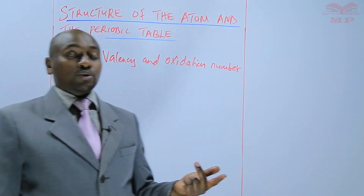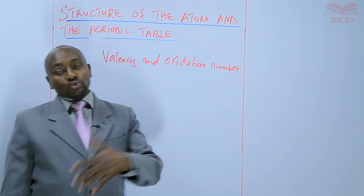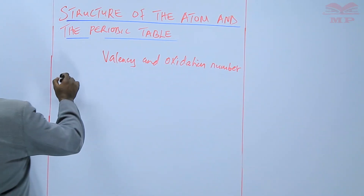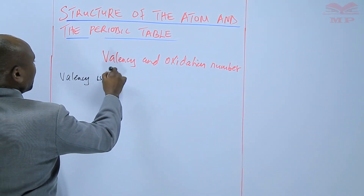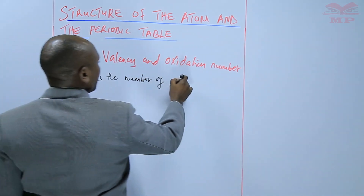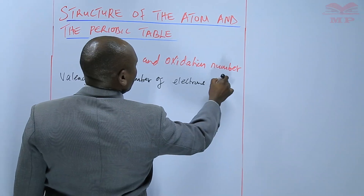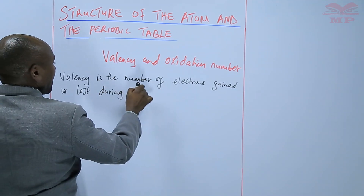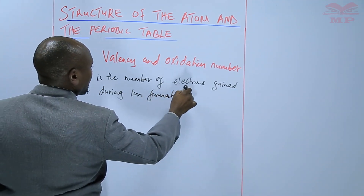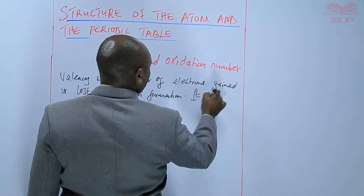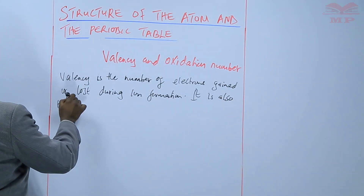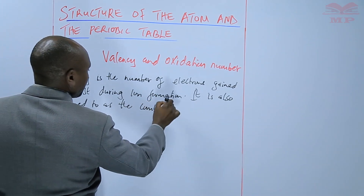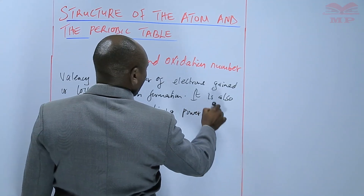If an atom gains 1 electron, the valency is 1. If it loses 1, the valency is 1. If it gains 2, the valency is 2. If it loses 2, the valency is still 2. So valency is the number of electrons gained or lost during ion formation. It is also referred to as the combining power of an element.